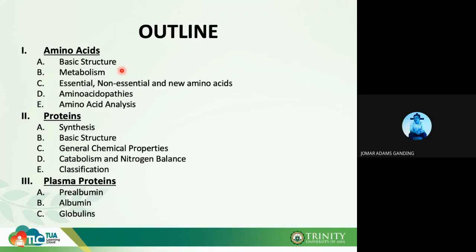For today we will be talking about the basic structure of amino acids, the importance of their metabolism, essential and non-essential amino acids, newly discovered amino acids, and amino acidopathies — the metabolic errors like MSUD, alkaptonuria, tyrosinuria and others. We'll also have a quick one slide about amino acid analysis.